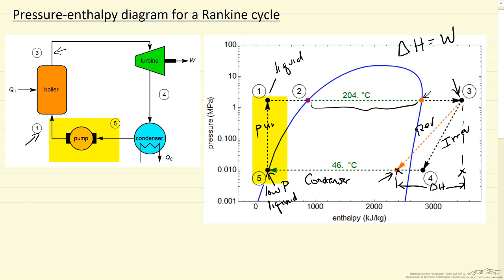This is the liquid pump where we raise the pressure, and notice the line looks essentially vertical in this plot. We don't increase the enthalpy very much. This is a good thing because it does not take much energy to raise the pressure of the liquid. We get back to high-pressure liquid at one, and now we can start this cycle again.